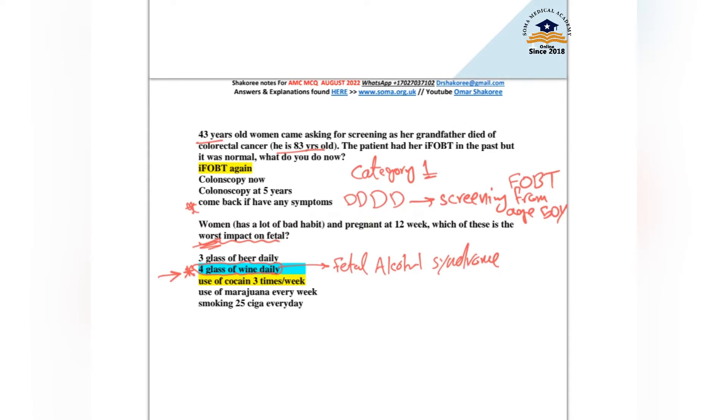43-year-old lady asking about screening. Her grandfather died with colorectal cancer at 83 years old. The patient had FOBT in the past but it was normal. What will you do now? She is category one in risky people for screening colorectal cancer. For category one, you will do screening after age of 50 years.